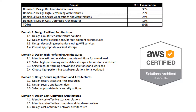Domain four, which is the final domain, we'll take a look at designing cost-optimized architectures — how to identify effective storage solutions, how to identify cost-effective compute and database services, and then designing cost-optimized network architectures.